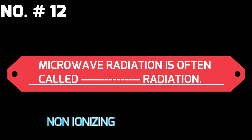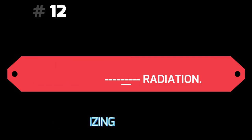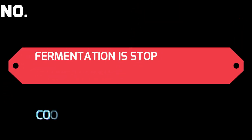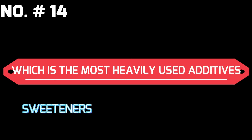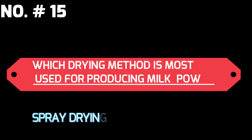Microwave radiation is often called non-ionizing radiation. Fermentation is stopped by pasteurizing and cooling. Which is the most heavily used additive? Answer: sweetness. Which drying method is most used for producing milk powder?